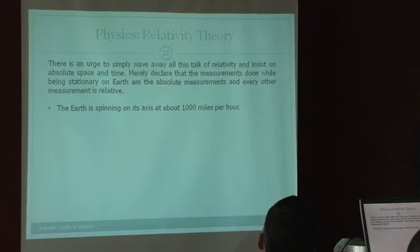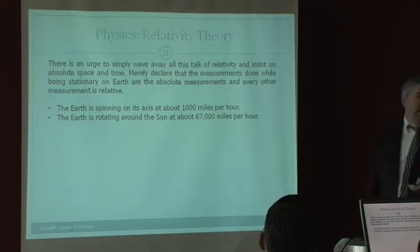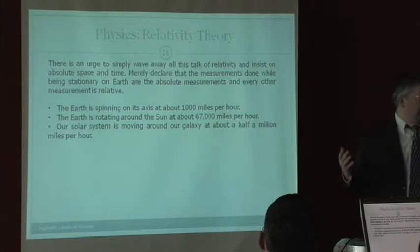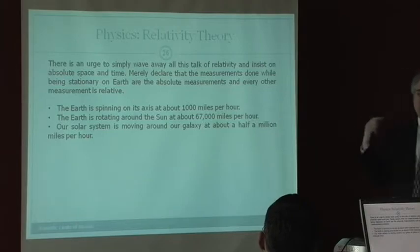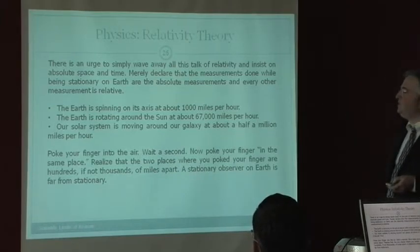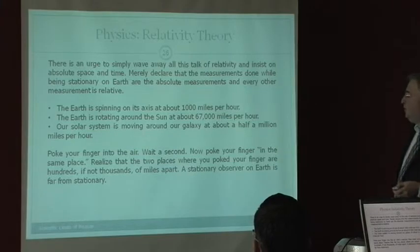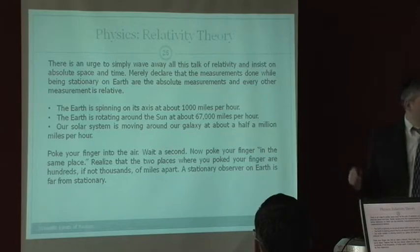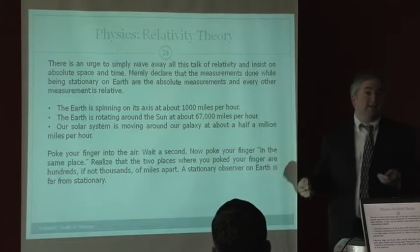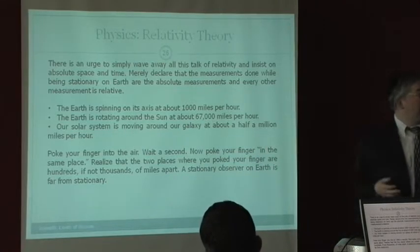The Earth is spinning around its axis at about 1,000 miles an hour. I don't feel it, but we're moving now at 1,000 miles an hour, going around, day, night, et cetera. The Earth is rotating around the Sun about 67,000 miles per hour. Our solar system is moving around our galaxy at about half a million miles an hour, so we're all moving now. There's no such thing as exact, and the speed we're moving depends on the size of the Earth. It's not really interesting. Poke your finger into the air. Wait a second. Now poke your finger in the same place. Realize that the two places where you poke your finger are hundreds, if not thousands of miles apart. It moves. A stationary observer on Earth is far from stationary. We're not stationary. We're constantly moving, and we're moving very fast.